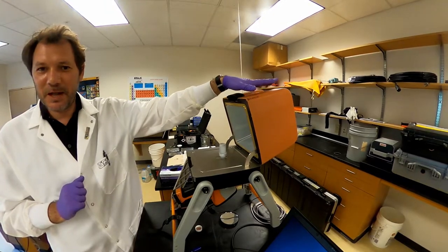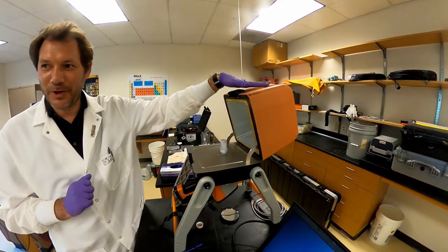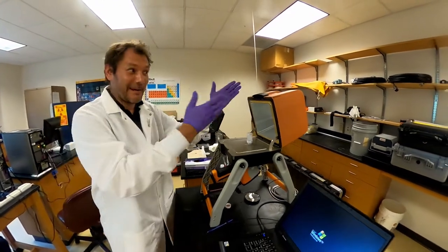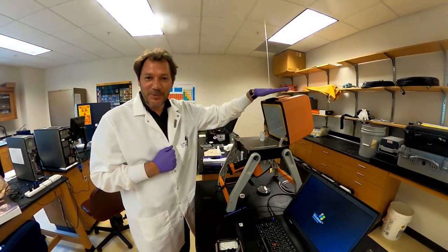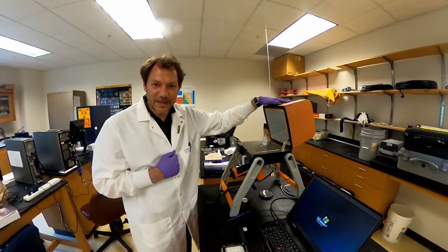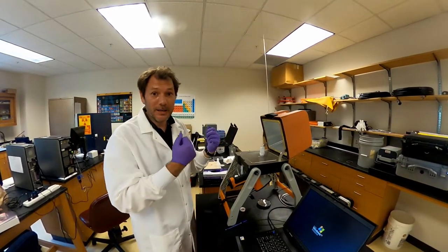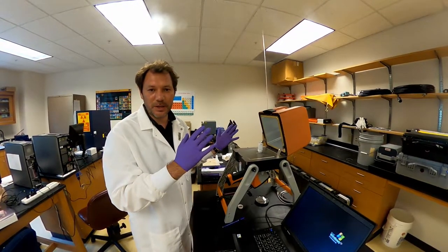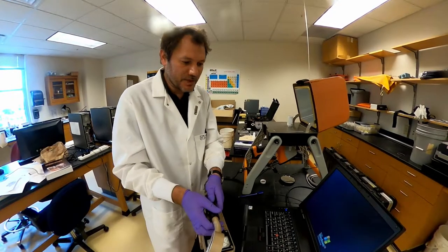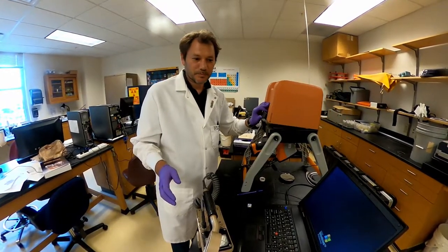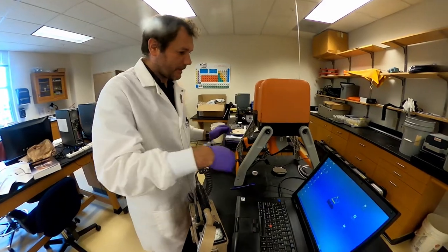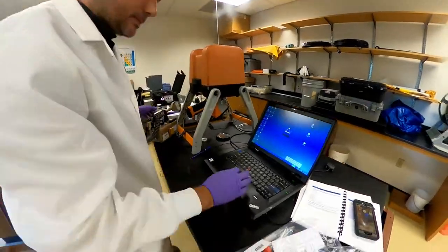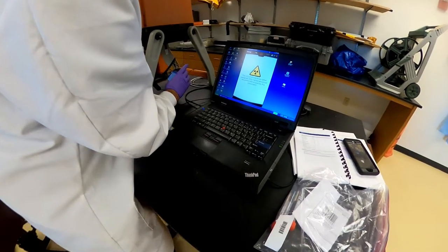So we just put the sample on top of this opening so that we can analyze it. This is made of an element that you know very well, which is lead. Because lead, as we know, is an extremely dense material with a lot of electrons, so it's actually going to absorb the excess X-rays that are generated during the analysis. For safety purposes, of course, I will close the door.